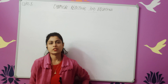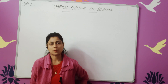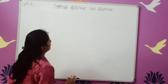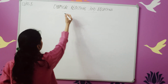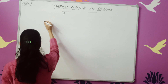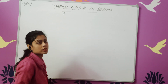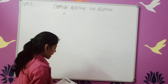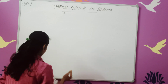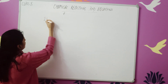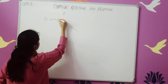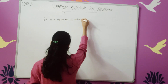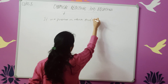Good morning everyone. Today we start with Chapter 1, Class 10: Chemical Equations and Reactions. So what is a chemical reaction? A chemical reaction is a process in which one or more substances react to form some other new substance.